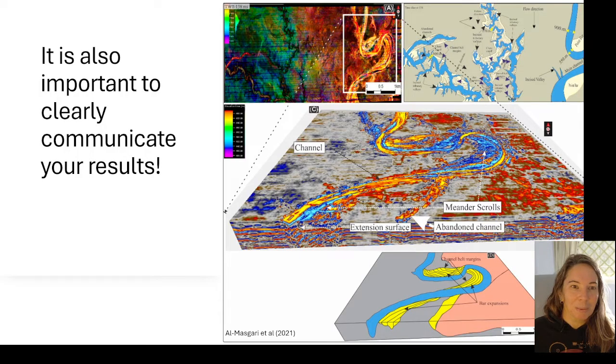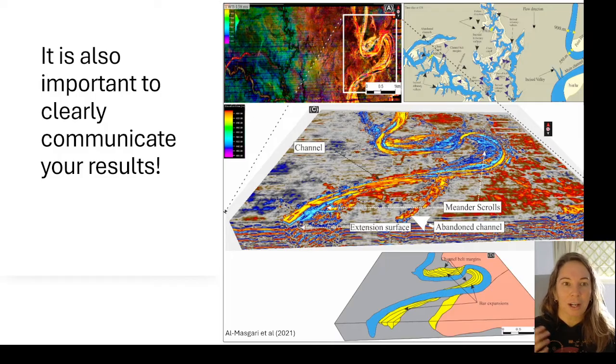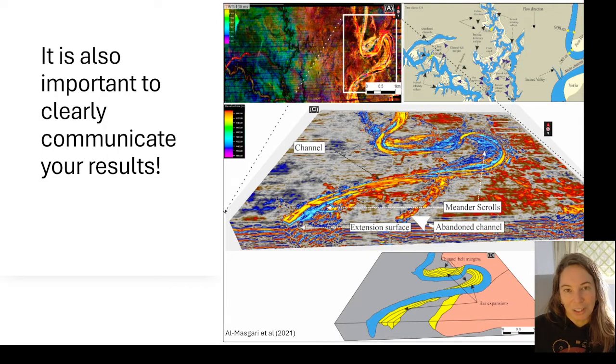Here's another example of trying to clearly communicate those results. So now we've got some of the seismic attributes. We've got a cartoon on the upper left. We also have kind of like a 3D visualization of this channel that the authors of the study are trying to show. And then a cartoon of what they see as well as annotations pointing out the different features that they see without obscuring any of the raw data. So that people can look at it and say okay I see what you mean by meander scroll.